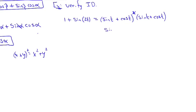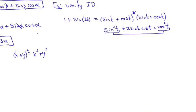When you foil it out, you get sine squared t plus 2 sine t cosine t plus cosine squared t. Sine squared plus cosine squared equals 1 — that's the Pythagorean identity. So you get 1 plus 2 sine t cosine t.